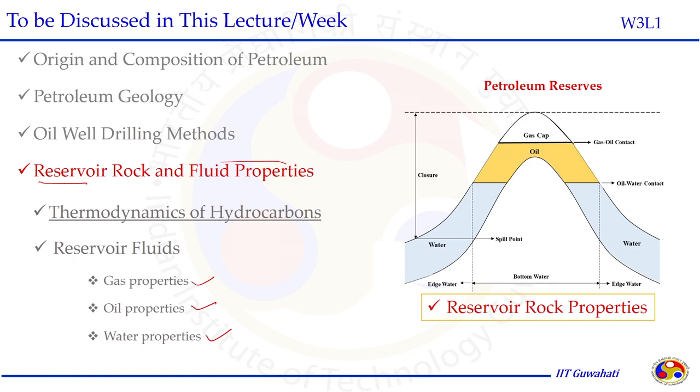If you see in the schematic diagram here, the oil, gas and water are stored underneath the surface in the reservoir rock. This reservoir rock could be a variety of types, as we discussed in the petroleum geology. Mostly it is carbonate and sandstone reservoir where the hydrocarbon fluids are stored — that is what we call the sedimentary rock, where the possibility of getting hydrocarbon reserves is high.